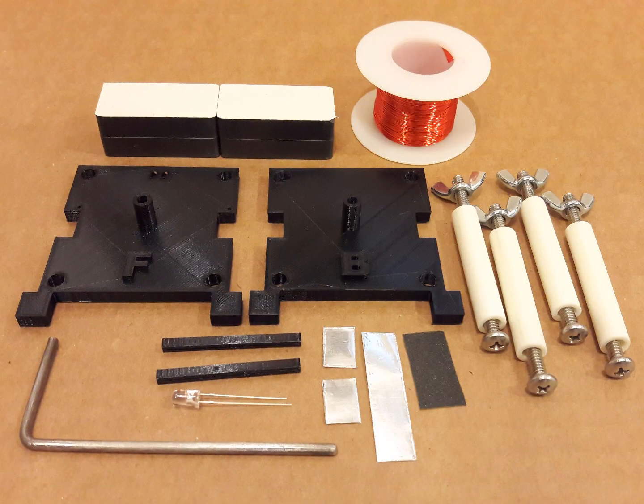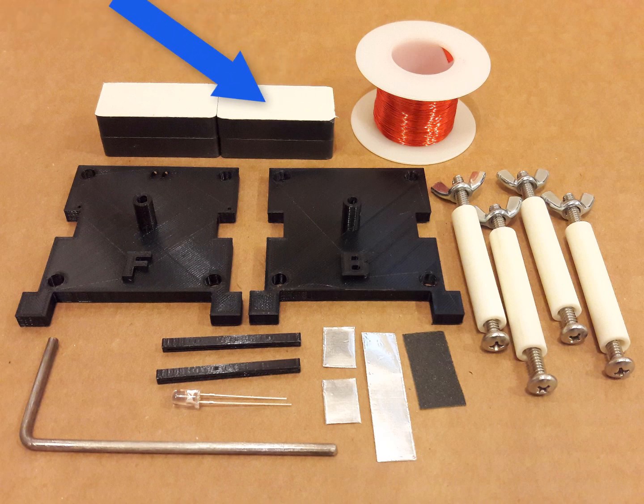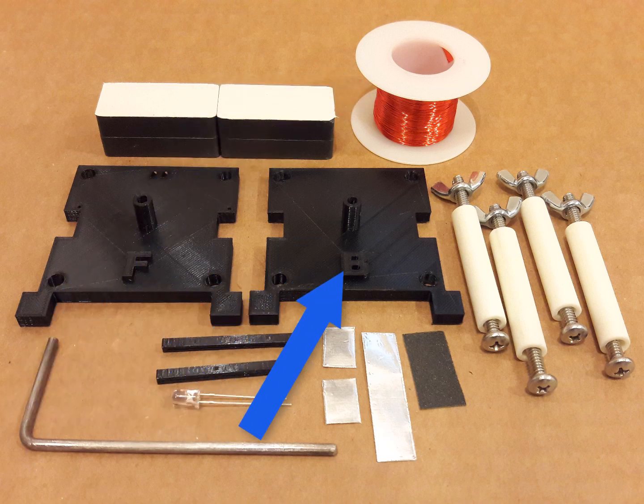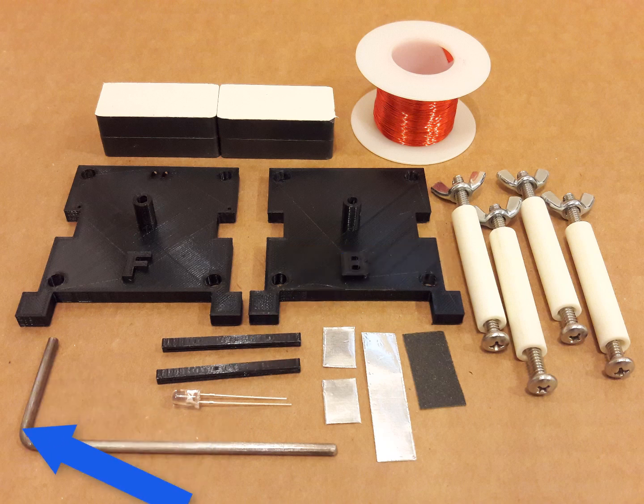The do-it-yourself mini alternator kit comes with 2 magnet stacks, 1 spool of magnet wire, 2 alternator brackets, 4 bolts with wingnuts and spacers, and a hand crank.